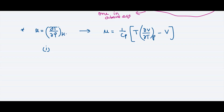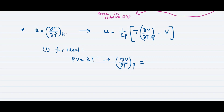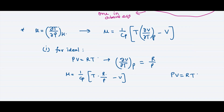Next, we look at mu for an ideal gas. For an ideal gas, the state equation is PV equals RT. From this, (∂V/∂T) at constant pressure equals R/P. Substituting into our general equation: mu equals (1/Cp) times [T times (R/P) minus V]. Since PV equals RT, we have RT/P equals V, so this becomes (1/Cp) times [V minus V].